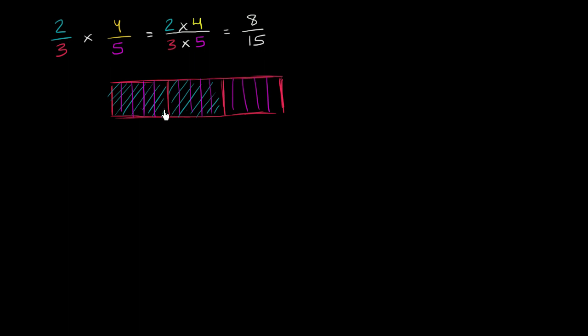But you see you have 1, 2, 3, 4, 5, 6, 7, 8, 9, 10, 11, 12, 13, 14, 15. Where did that come from? I had 3. I had thirds. And then I took each of those thirds and I split them into 5ths. So then I had 5 times as many sections. 3 times 5 is 15.